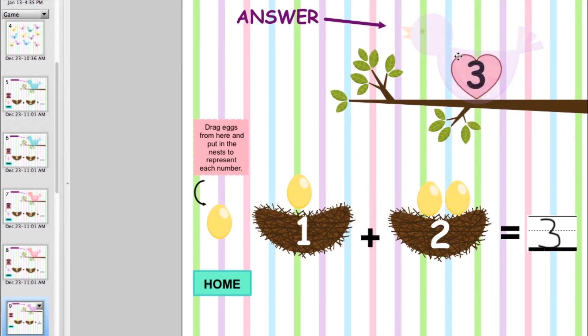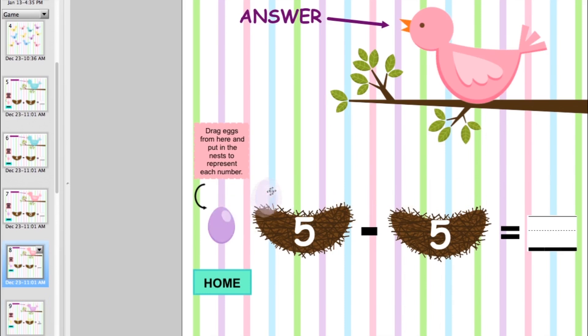They write the answer and then touch the bird to check their answer. There's also subtraction problems where they place eggs in the first nest, then they switch them over to the second nest to see how many are still left in the first nest.